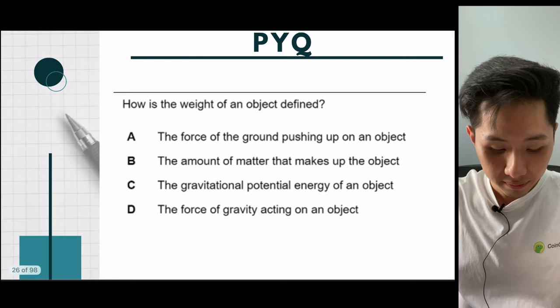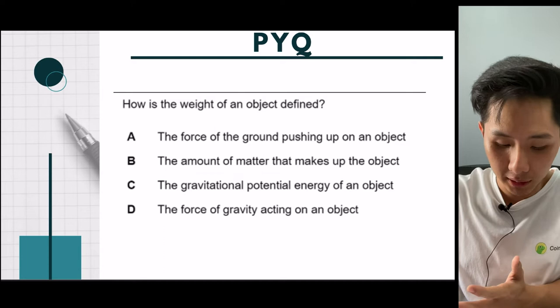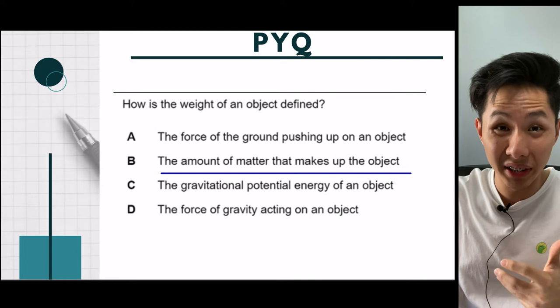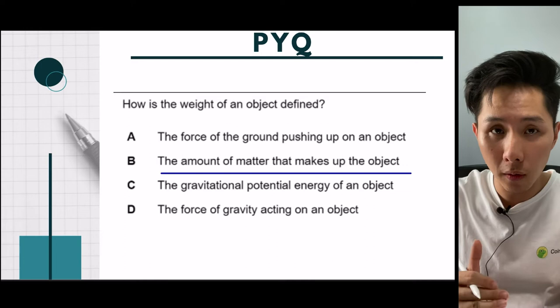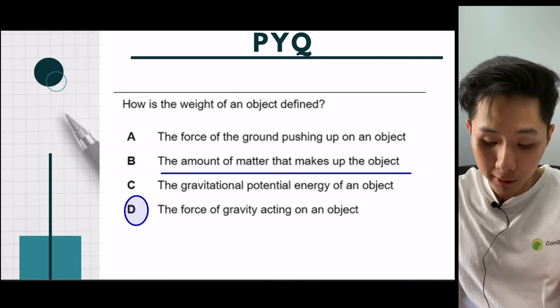Here's a practice question: how is the weight of an object defined? Before this chapter you might say it's how heavy it is, but now you know weight is the gravitational force pulling the object down. The answer is D — the force of gravity acting on an object.